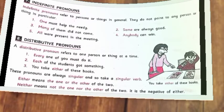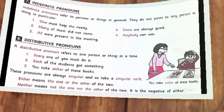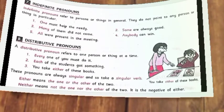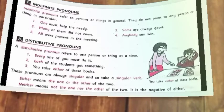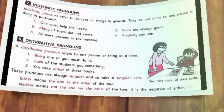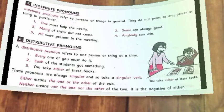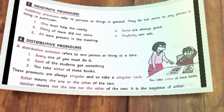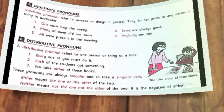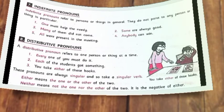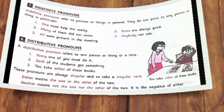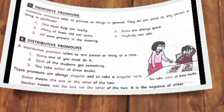The last kind of pronoun is distributive pronouns. A distributive pronoun refers to one person or thing at a time. For example: 'Every one of you must do it.' Here, the distributive pronoun is 'every.' Another example: 'Each of the students got a prize.' The distributive pronoun is 'each,' which refers to only one student.